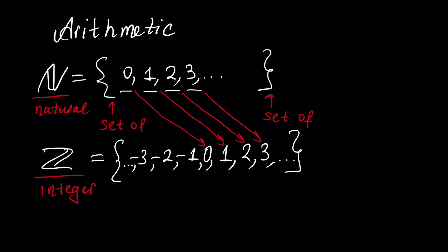So each element of natural numbers is inside integer numbers. That's why natural numbers is a subset of integer numbers. In mathematics, we write that N (natural numbers) is a subset of Z (integer numbers), and this symbol stands for 'subset of'.